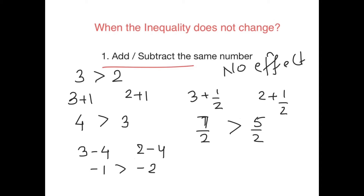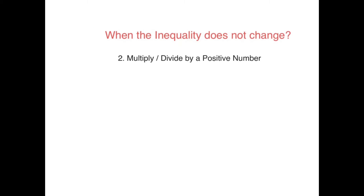The inequality also does not change when you multiply or divide by a positive number. A positive number is anything greater than zero — it should not be equal to zero. For example, if you take three more than two and multiply both sides by zero, the left becomes zero and the right becomes zero and the inequality will not hold. So whenever you talk about a positive number, take any number that is greater than zero.